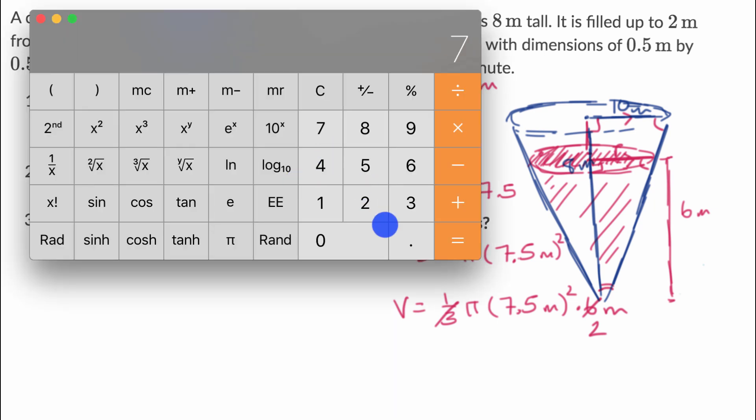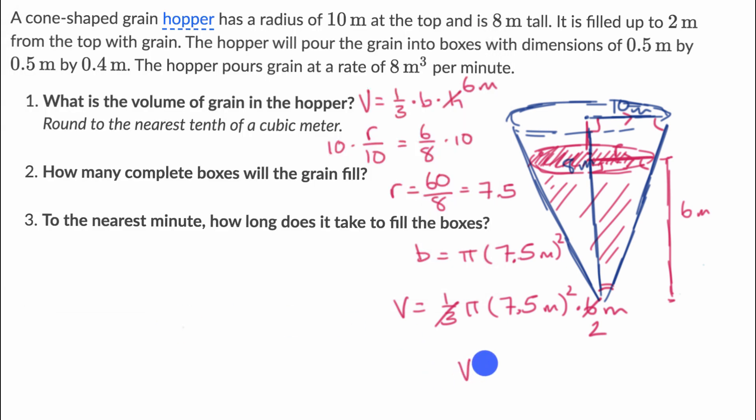So we have 7.5 squared times two times pi is equal to—if we round to the nearest tenth, it's going to be 353.4 cubic meters. So the volume is approximately 353.4 cubic meters. So that's the answer to the first part right over there.